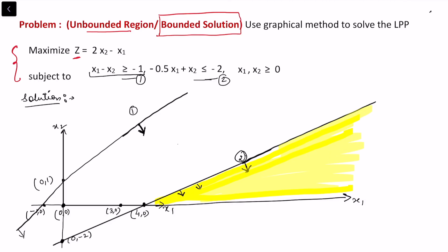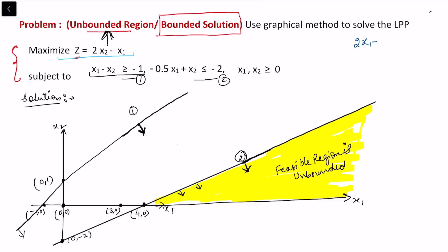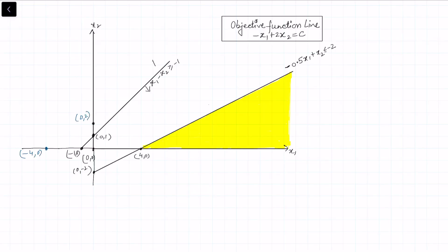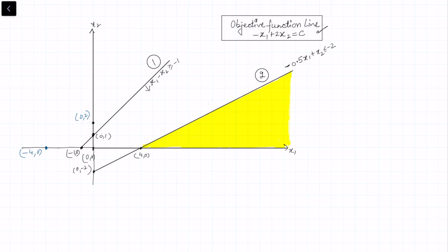Once we identify the feasible region, we check whether it is bounded or not. In this case the feasible region is unbounded, which is why the statement already mentions 'unbounded region.' However, in this unbounded region we need to identify what happens to the value of z — whether z is bounded or unbounded — just as we did in the previous example.